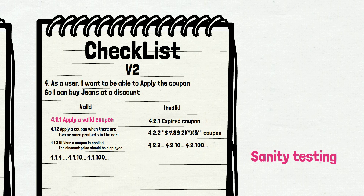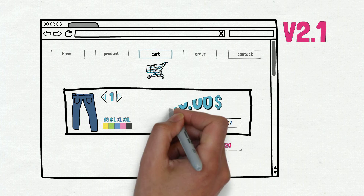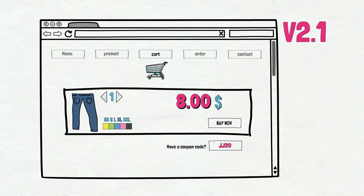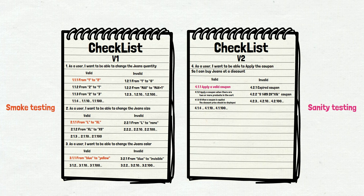We go back to the website and apply the valid coupon. We can see that the new valid price is displayed — we now need to pay only 8 instead of 10 dollars total. It means our sanity test case passed. We can continue with testing, or, as the definition says, determine whether it is possible and reasonable to proceed with further testing of the entire application. Now that both smoke testing and sanity testing are done, we can continue with all other test cases on the checklist — functional, non-functional, positive, and negative.